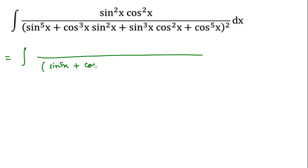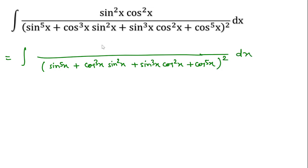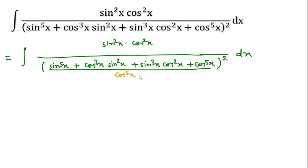We have sin⁵x plus cos⁵x over sin²x plus sin⁵x · cos²x plus cos⁵x. To solve this question I will divide by the denominator part cos⁵x, then we can write this over cos⁵x. Since here I am dividing by cos⁵x, this is so we can make these terms into tan form.